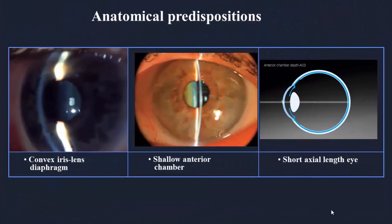Anatomical predisposition for pupillary block includes a short axial length eye. This short axial eye leads to crowding of the ocular structures and makes the lens large in relation to the other ocular structures. This causes the iris to fall forward to some degree, producing a shallow anterior chamber, with a convex iris configuration. All these factors create a high liability for pupillary block.